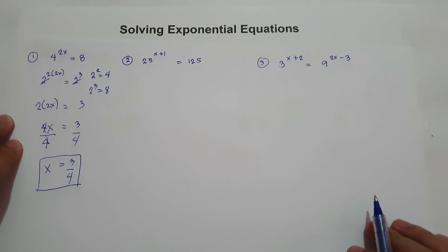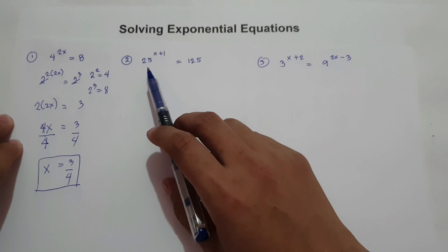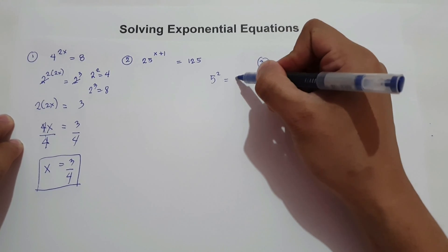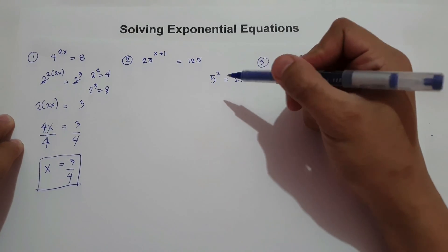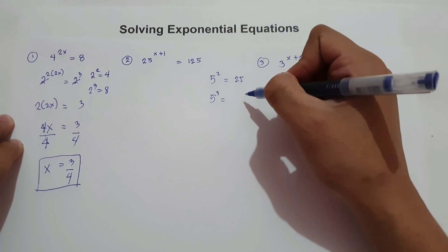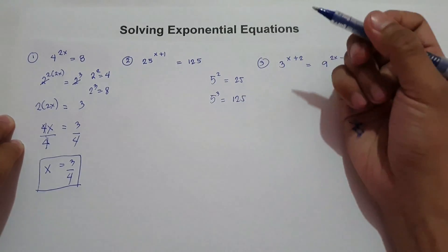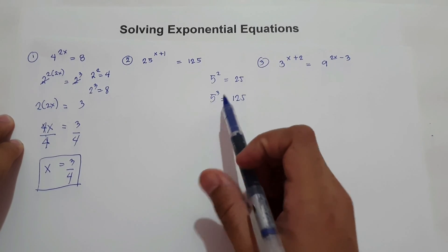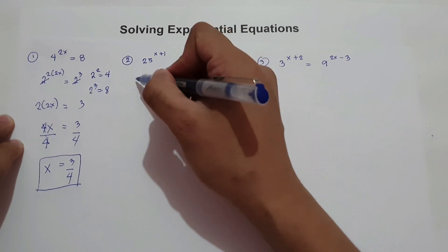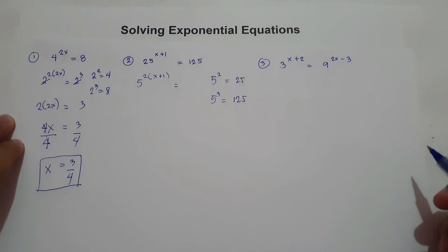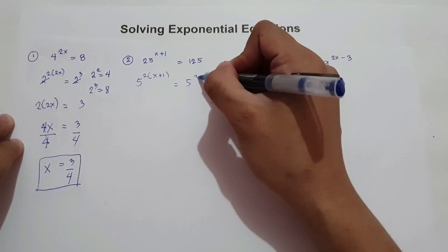What about number 2? We have 25 raised to x plus 1 equals 125. Let us change 25 and 125 with the same base. 5 squared is 25, and 5 cubed — that is 5 times 5 times 5 — is 125. So let us change 25 into 5 squared and 125 into 5 cubed. So 5 squared times x plus 1 equals 5 cubed.